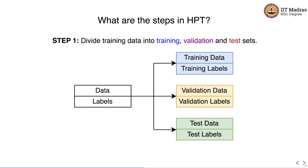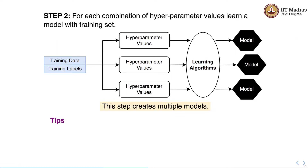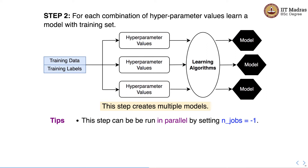As a first step we divide training data into training, validation, and test sets. In the second step, for each combination of hyperparameter values we train a model using the training set. These values may be specified via GridSearchCV or RandomizedSearchCV. Depending on how many hyperparameter configurations we want to try, we train that many models. Since all these models are being trained independently, we can run this step in parallel by setting n_jobs to -1.